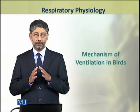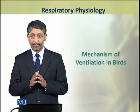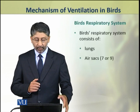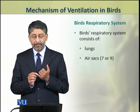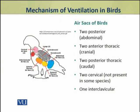Dear students, in this topic we shall discuss the mechanism of lung ventilation in birds. The bird's respiratory system consists of lungs and air sacs. The number of air sacs in birds may be 7 or 9. These air sacs include 2 posterior or abdominal air sacs, 2 anterior thoracic or cranial air sacs, 2 posterior thoracic or caudal air sacs, and 2 cervical air sacs which may not be present in some birds.